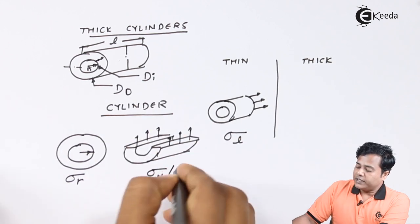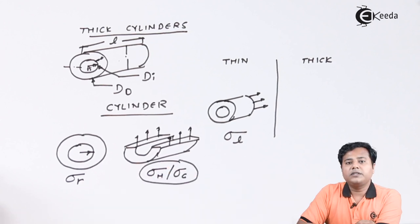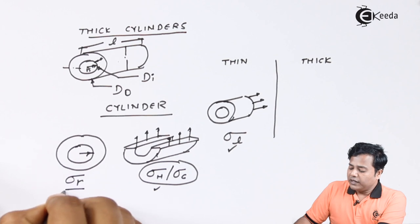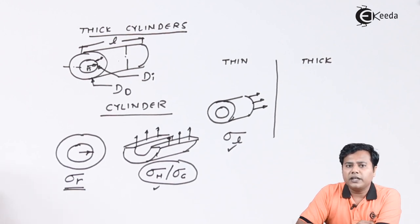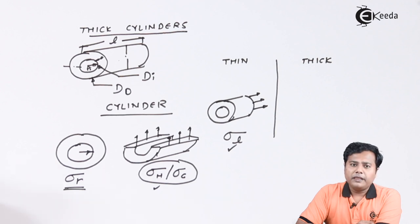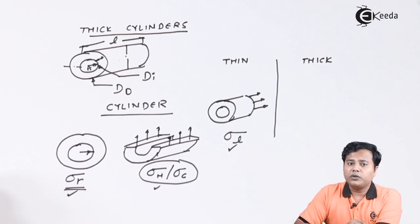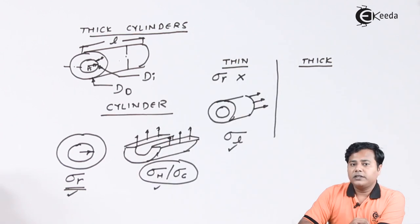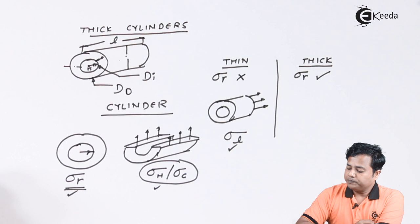Hoop stresses are also called circumferential stresses, denoted sigma c, and we know these are the largest in magnitude. In thin cylinders, we have considered hoop stresses and longitudinal stresses for design, and we considered radial stresses to be negligible. In the case of thick cylinders, the most important distinction is that radial stresses also come into picture and must be prominently considered.